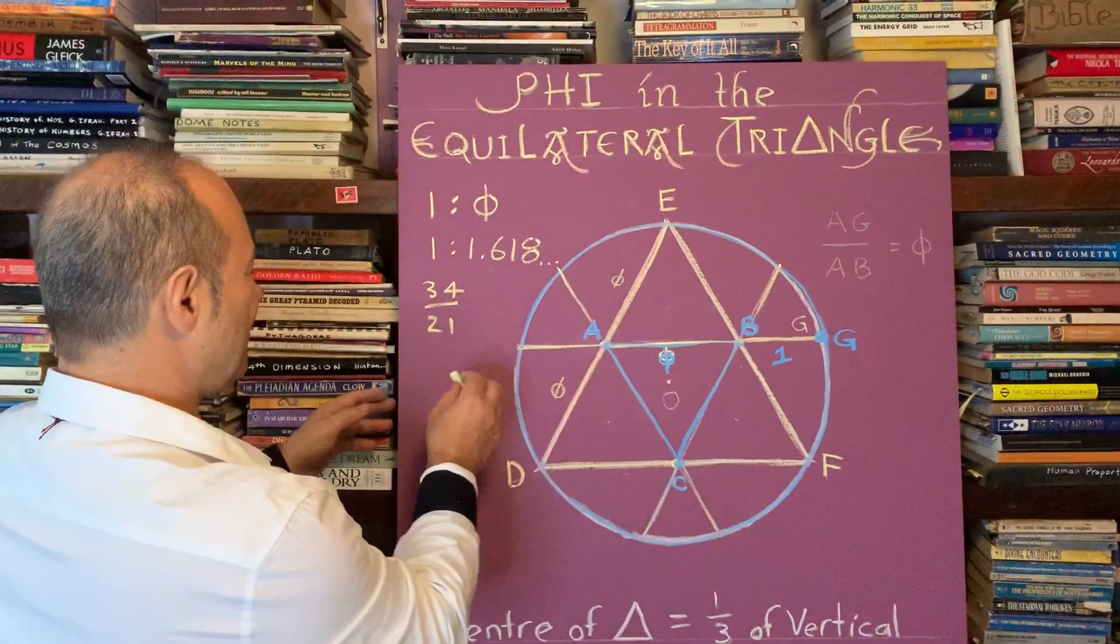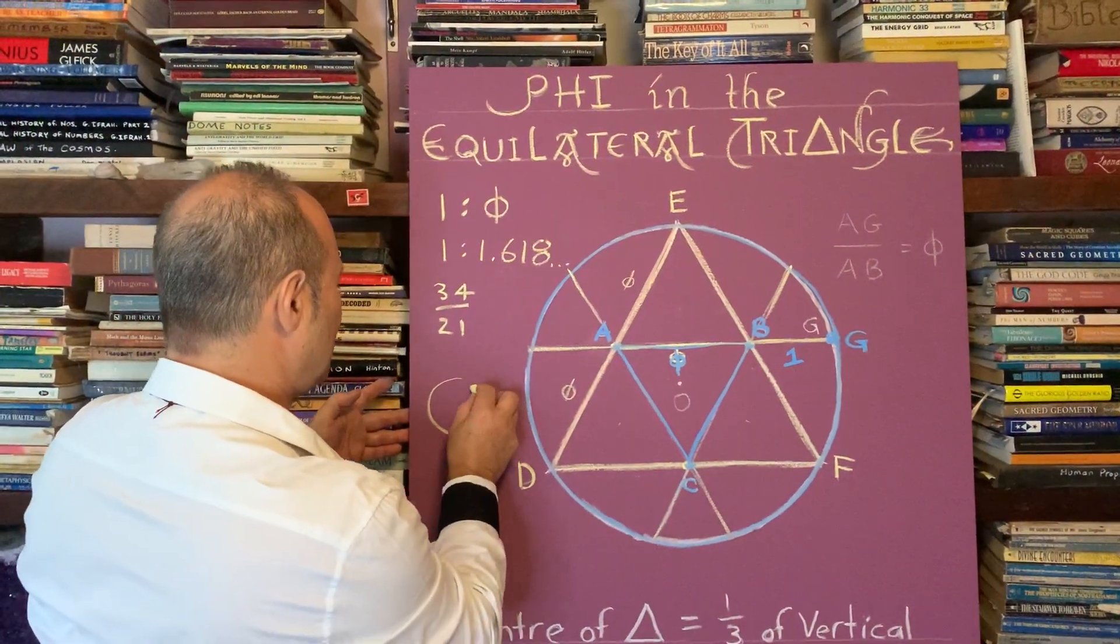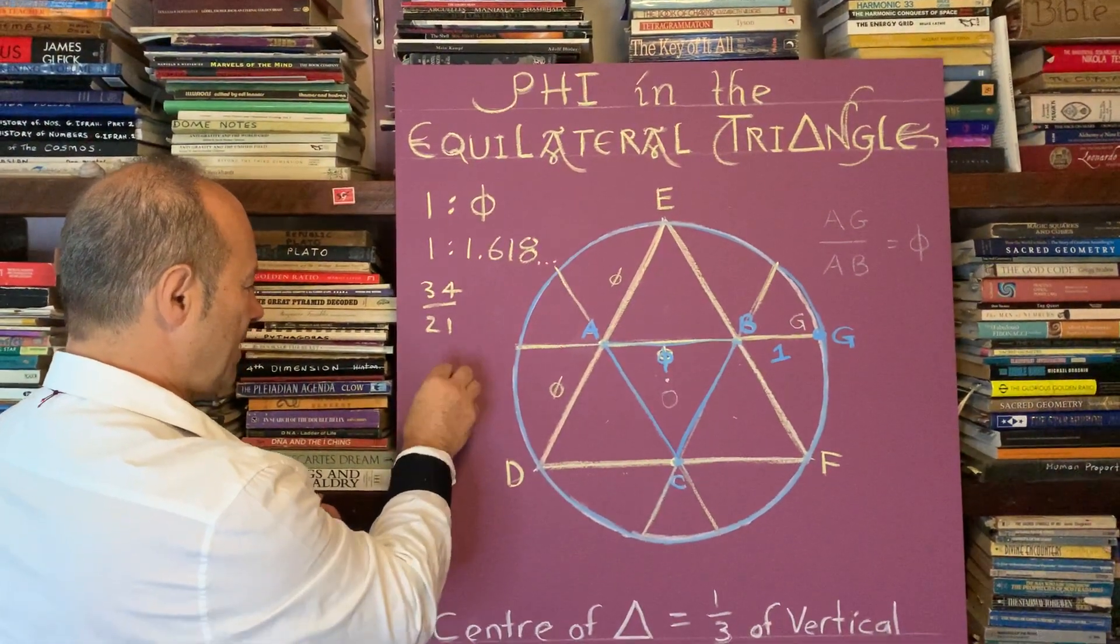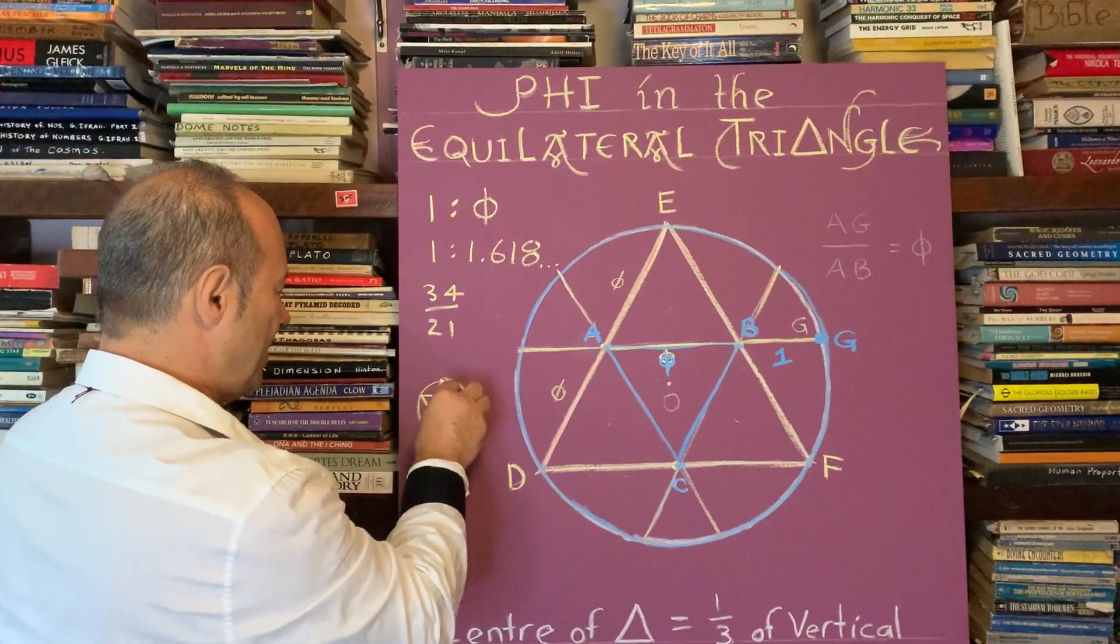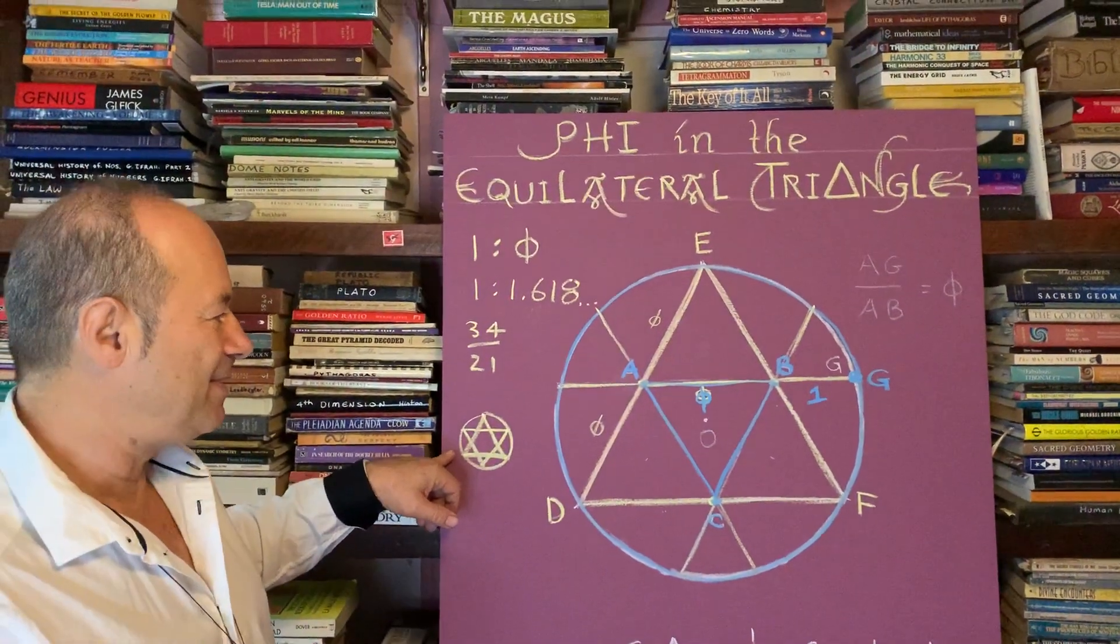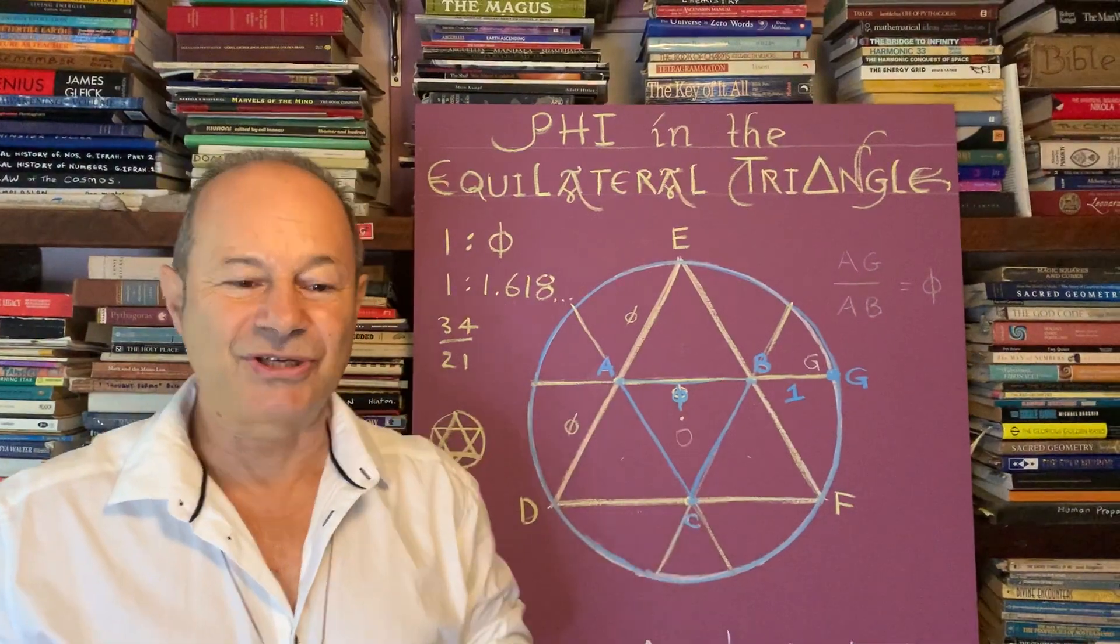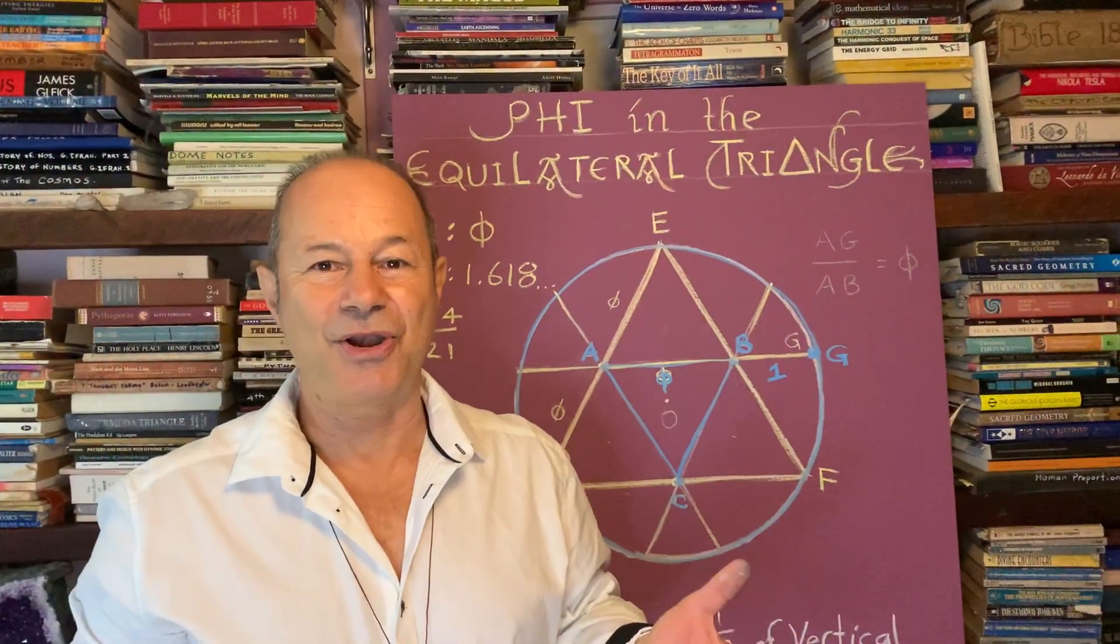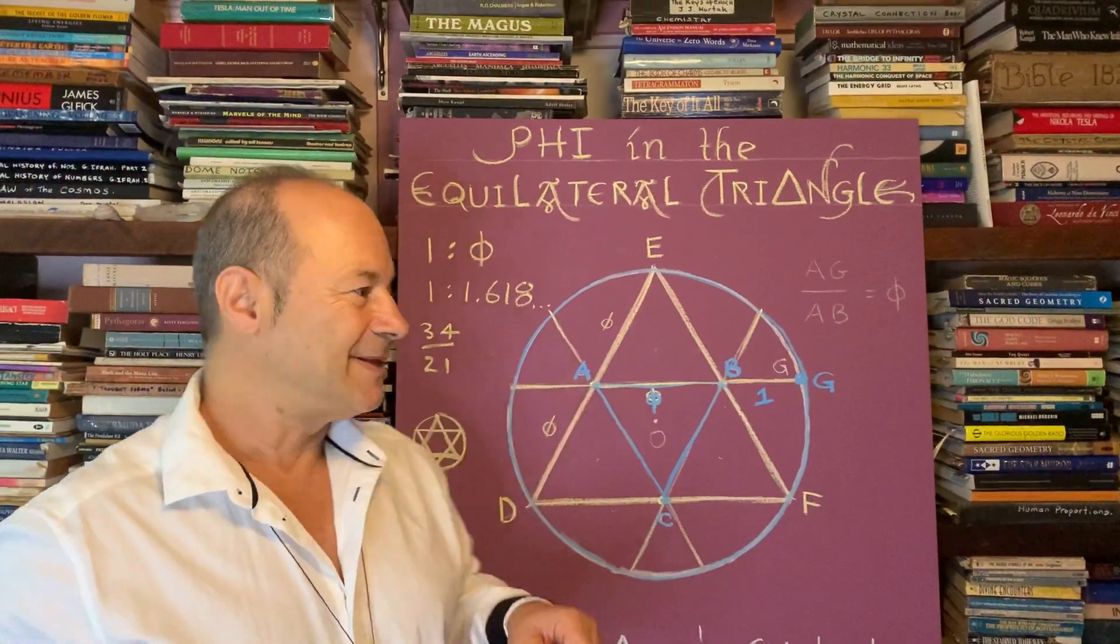That means if the triangle is in the phi ratio, it also means that the Star of David, when we draw a circle with one triangle interpenetrated by another one, means that sacred symbols like the Star of David must also be in the golden ratio.